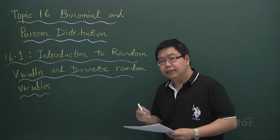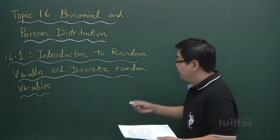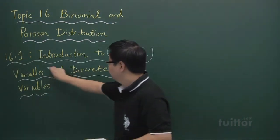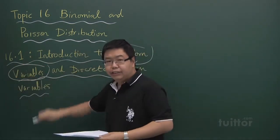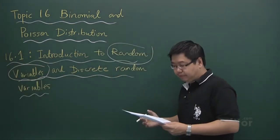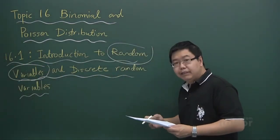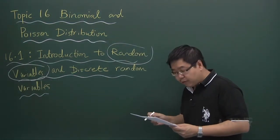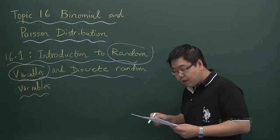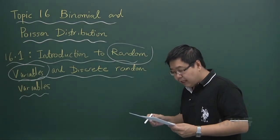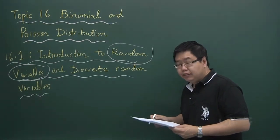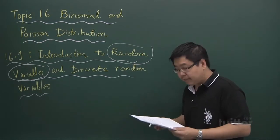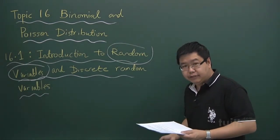We first introduce this concept of random variable. Now what actually is a random variable? From the definition given in your handout, it says that a random variable is a numerical variable whose value depends on chance. So a random variable is a number, and it depends on chance.